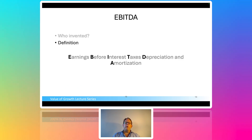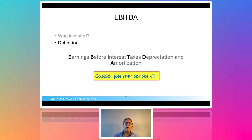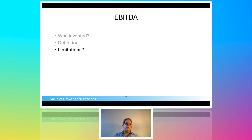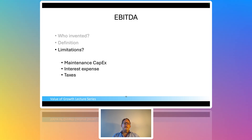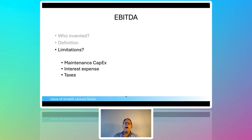EBITDA: earnings before interest, taxes, depreciation, and amortization. Does that cause you any concern? As equity holders, we're not really buying EBITDA, but it should cause some concern anyway. The natural limitations are that EBITDA does not take into account maintenance capex, interest expense, and taxes. For a lot of purposes people use EBITDA — financing debt and things like that — it has some power. However, there is a limitation: maintenance capex.